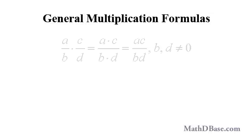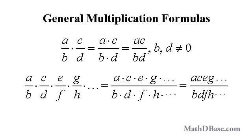Generally, any two algebraic fractions can be multiplied using this formula. The formula can be extended to multiply as many algebraic fractions as necessary. These formulas will work for any algebraic fractions provided that none of the denominators is 0, but the results will usually have to be reduced to lowest terms.